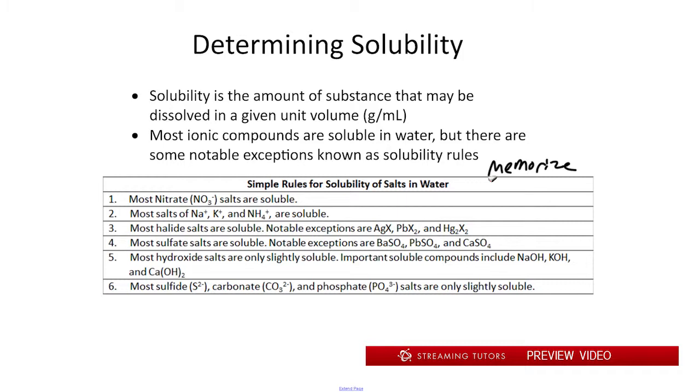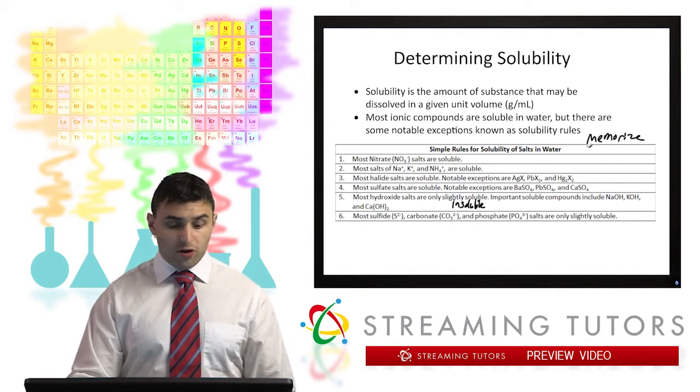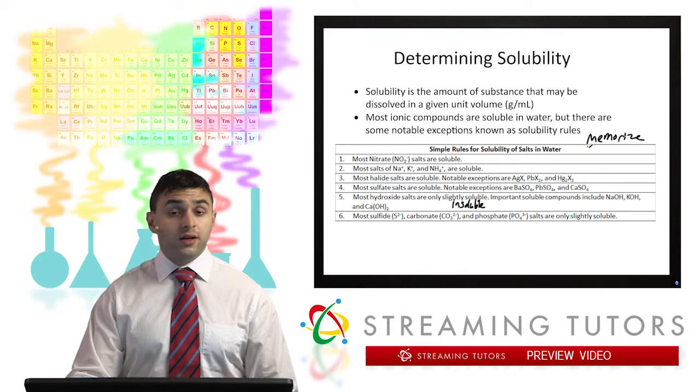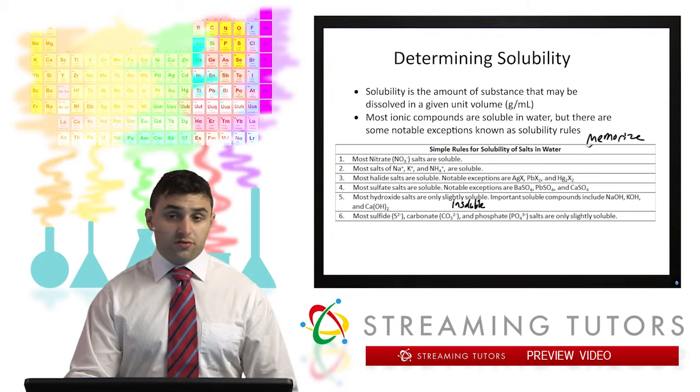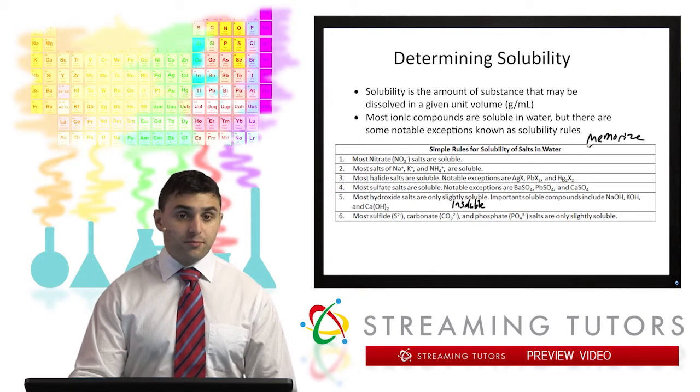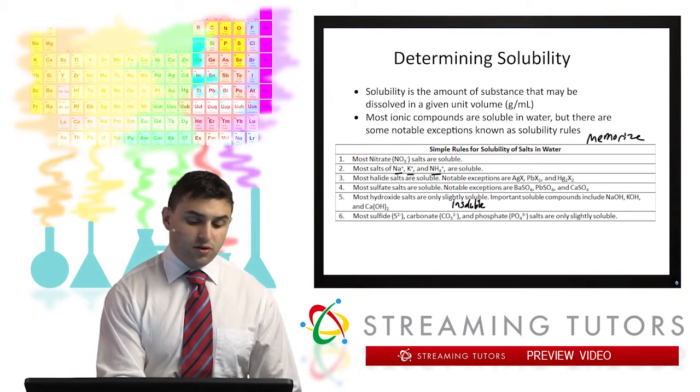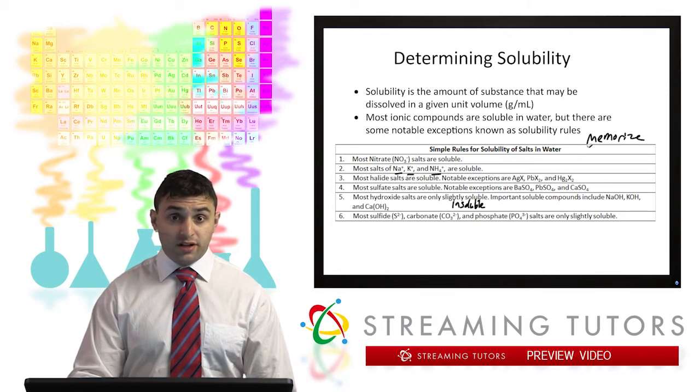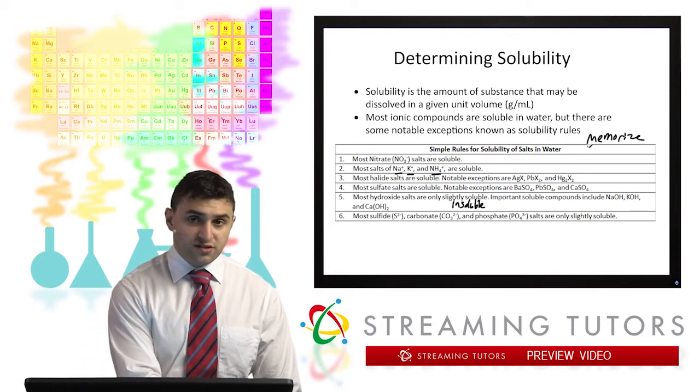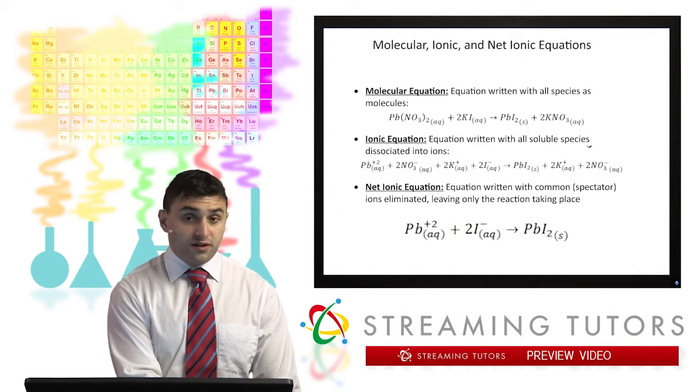Rule five states that most hydroxide salts are only slightly soluble, which basically means insoluble. The exceptions would be our strong bases that we saw in the previous video, including NaOH, KOH, and Ca(OH)2. All of our strong bases are our only soluble hydroxide species. The final rule is that most sulfide, carbonate, and phosphate salts are only slightly soluble. Those would only really be soluble if we combine them with sodium, potassium, or nitrate. These are the six biggest rules to keep in mind. These rules are going to explain what species are soluble versus which are insoluble, which is important in determining what things are precipitates.